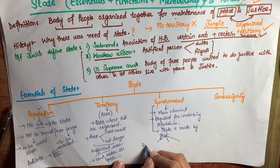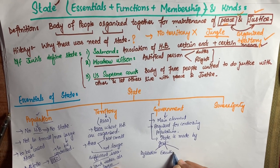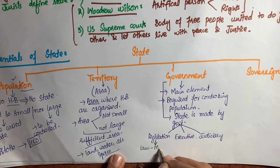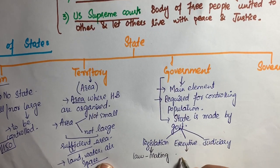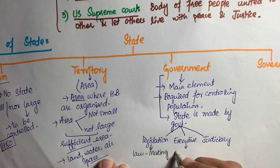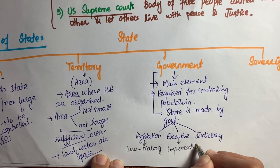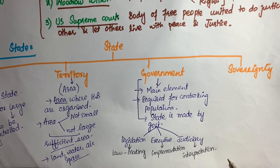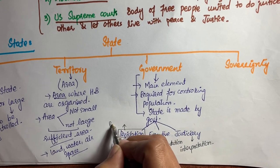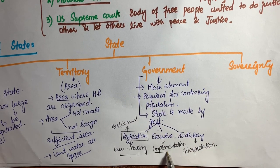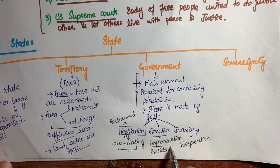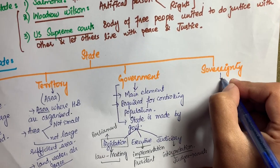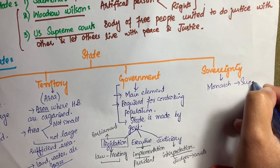Government has three main pillars: number one, legislation; number two, executive; and number three, judiciary. Legislation means the law-making authority — in government, the legislative authority is Parliament. The executive's work is to implement laws made by Parliament; the executive is headed by the President. The judiciary is responsible for the interpretation of laws, done by judges in courts.